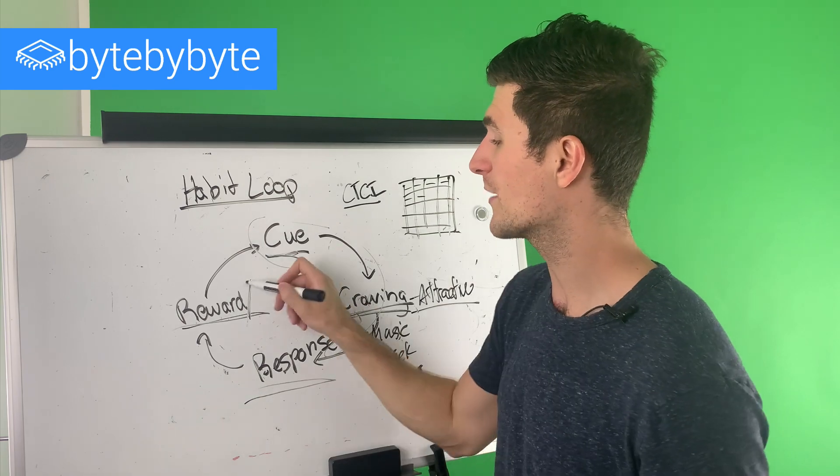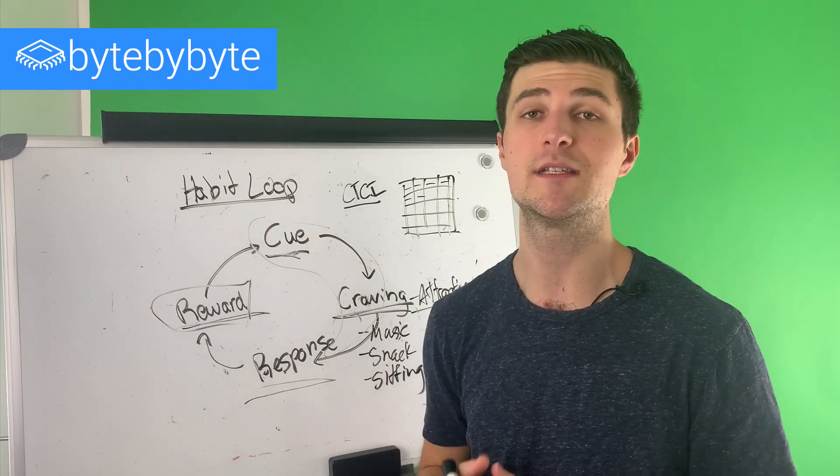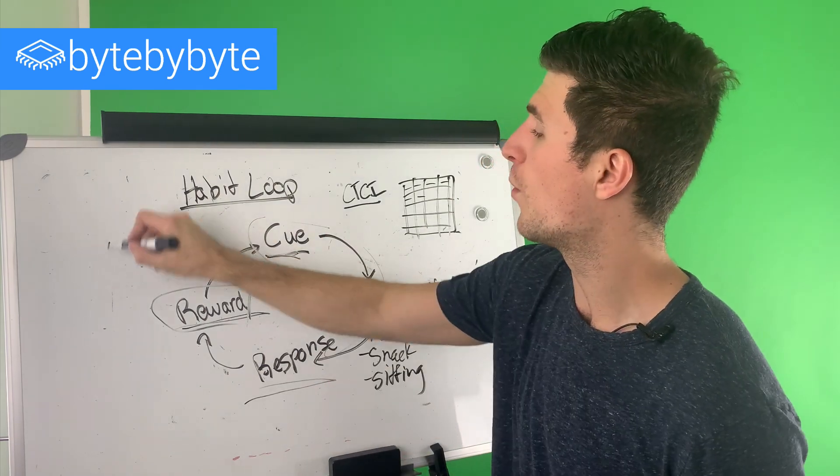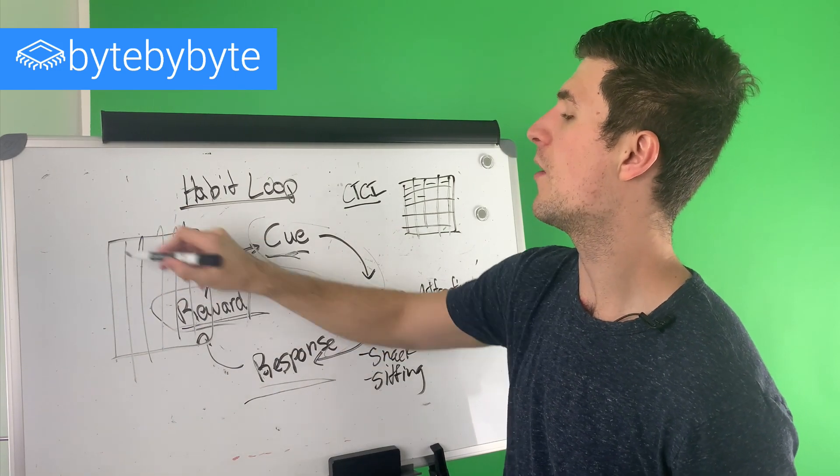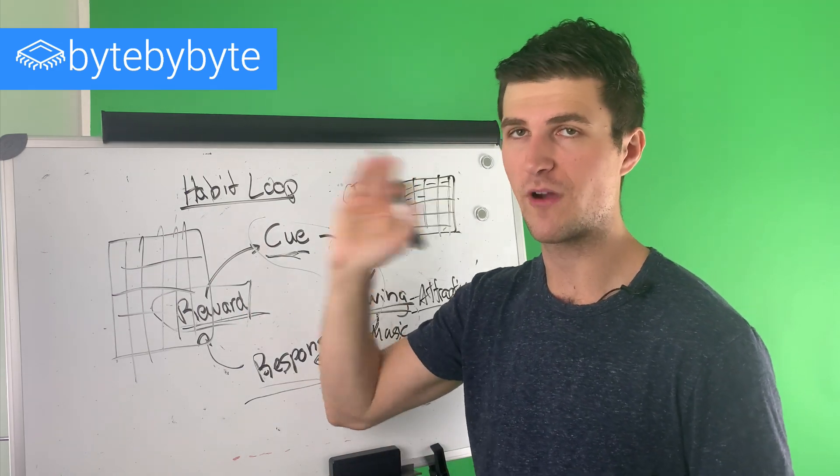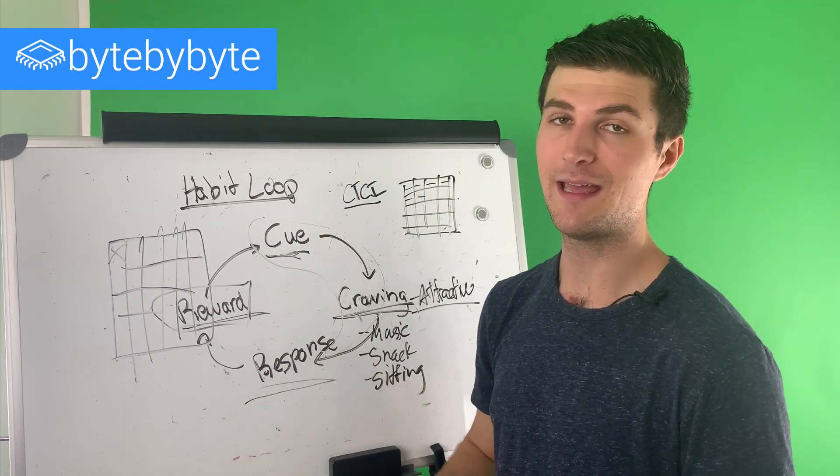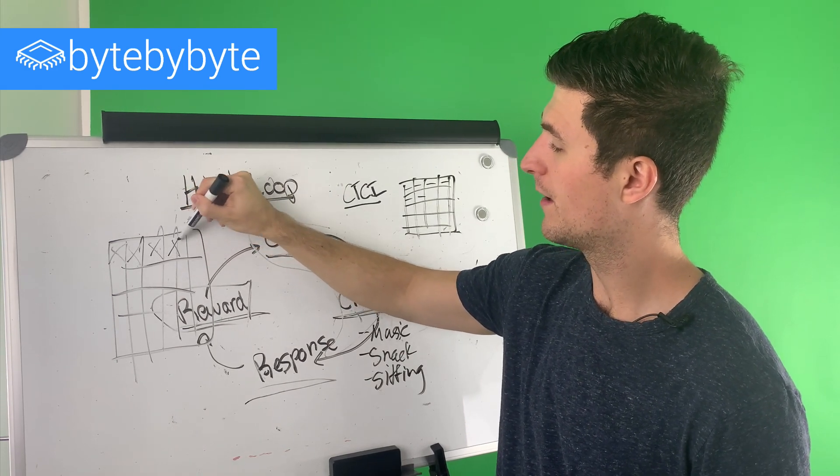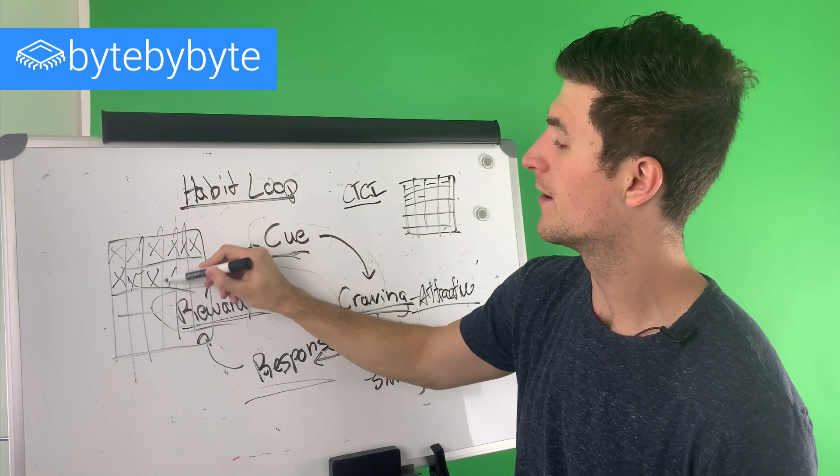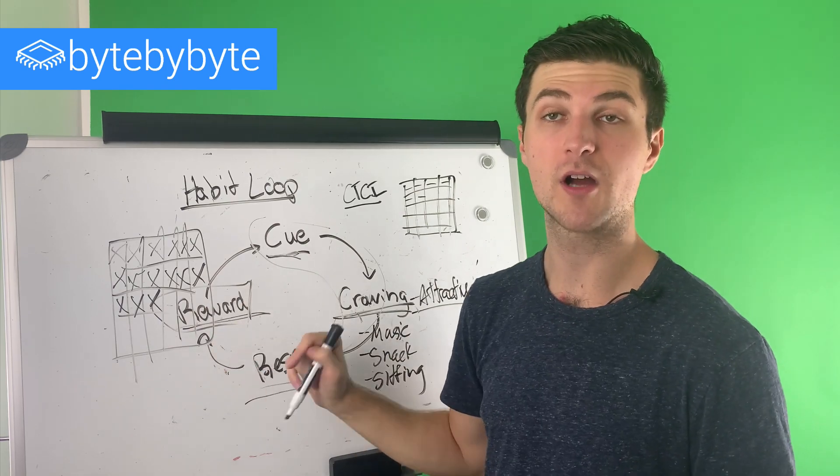The other thing that you can do to make the actual process more rewarding is something called the Seinfeld technique. And this I love because this is a strategy that Jerry Seinfeld used when he was trying to get better at writing jokes. And what he would do is he had this giant wall calendar. He had this giant wall calendar that was all 12 months, every day. And then what he would do is every day he set himself a goal of writing one joke. And when he wrote the joke, he would X it off on the calendar. And every day he would write a joke and he would X it off on the calendar.